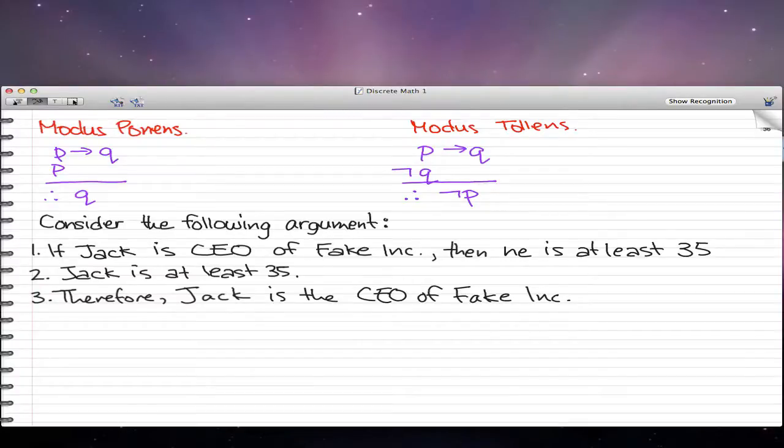What we have here is the following symbolic form. If this part is P and this is Q, and this is also Q, then that is P. Our symbolic form would be P implies Q for the first statement, then we have Q for the second statement, and therefore for the third statement, we have P.